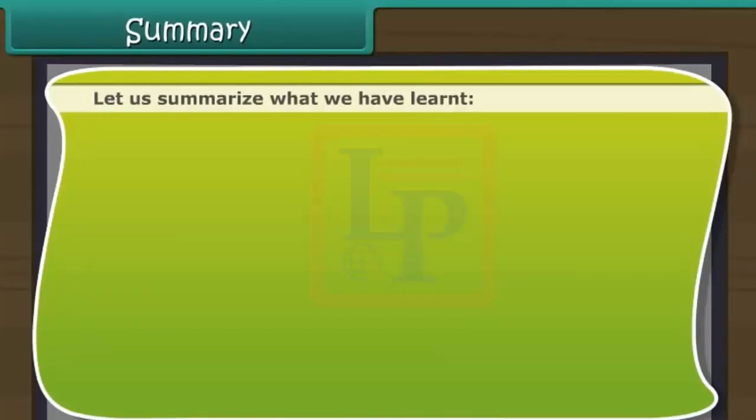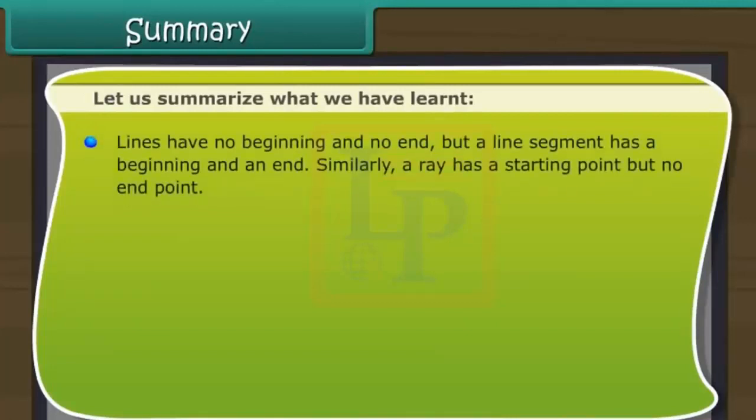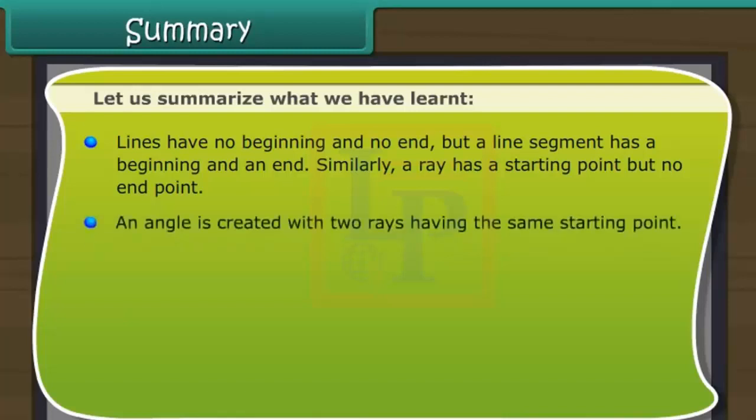Let us summarize what we have learnt. Lines have no beginning and no end, but a line segment has a beginning and an end. Similarly, a ray has a starting point, but no end. An angle is created with two rays having the same starting point.